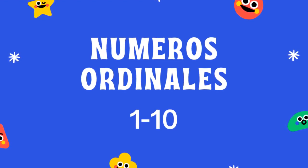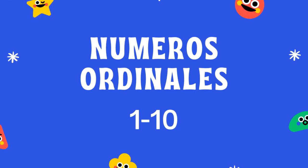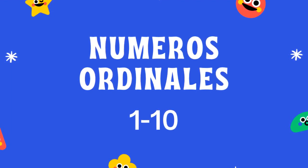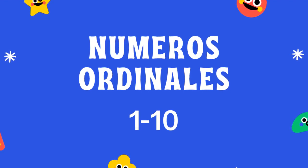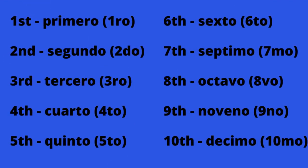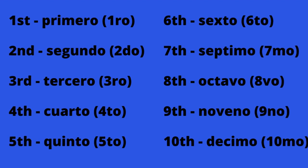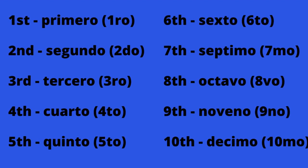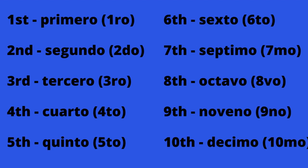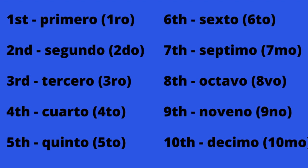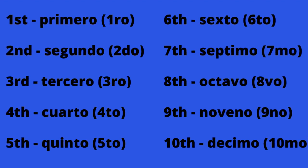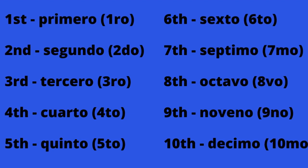But first, let's go over números ordinales. Remember, these are the ones that are in sequence — for example, first, second, third. Repeat after me. Primero, segundo, tercero, cuarto, quinto, sexto, séptimo, octavo, noveno, décimo. Of course, these números ordinales go higher, but a typical native speaker will stop at tenth place, and after that they'll just use the cardinal numbers.